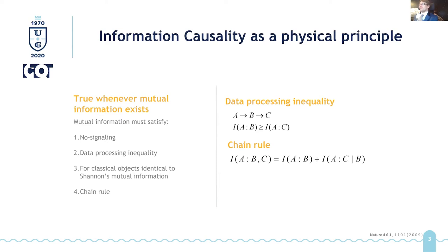Second is data processing inequality. I have it on the right hand side. So if through a Markov process A is transformed to B and B to C, then obviously the mutual information between A and C is smaller than between A and B.